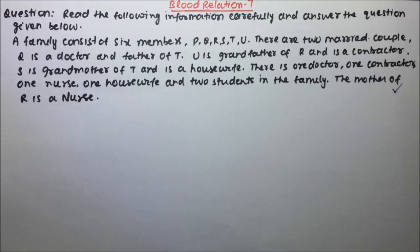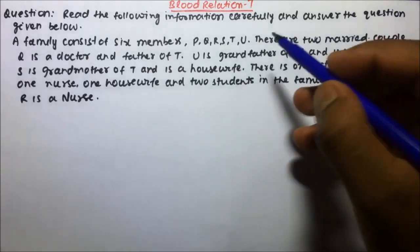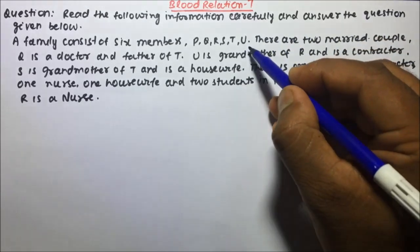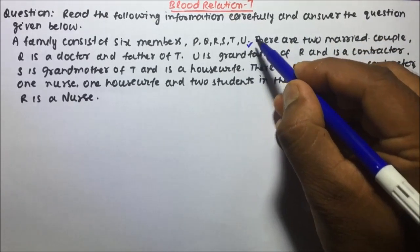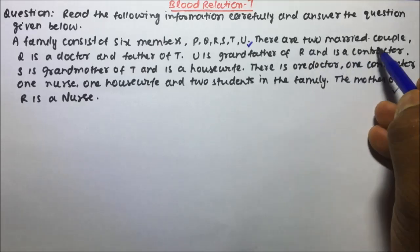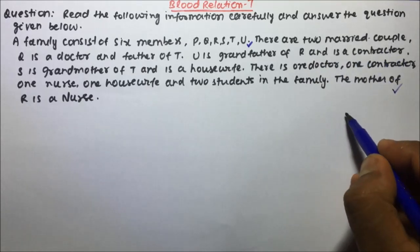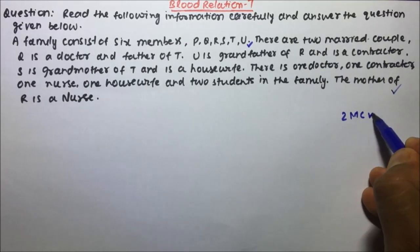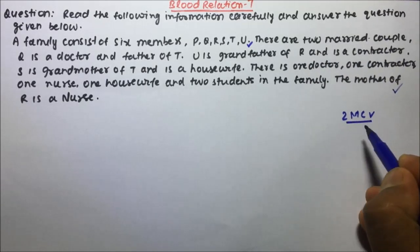Read the following information carefully and answer the question given below. A family consists of six members: P, Q, R, S, T, U. There are two married couples in the family.